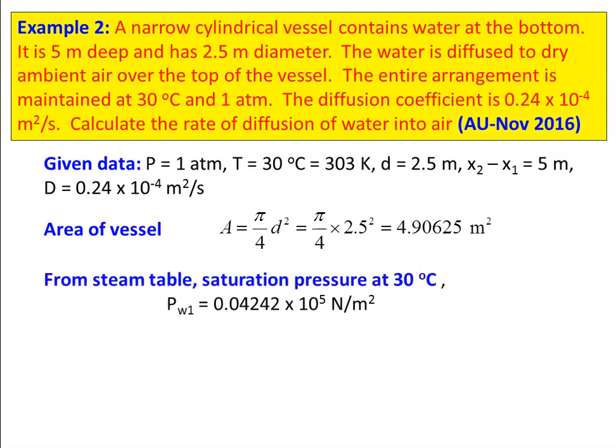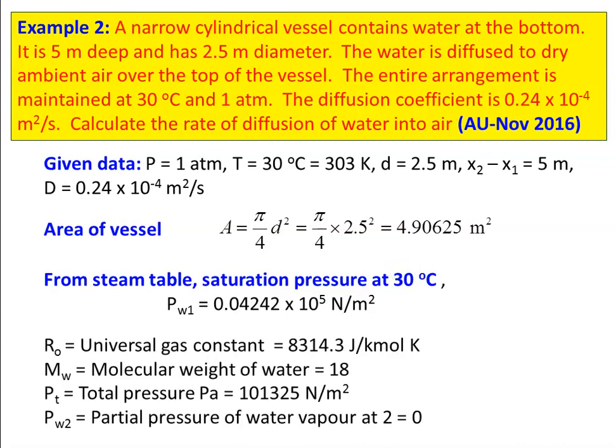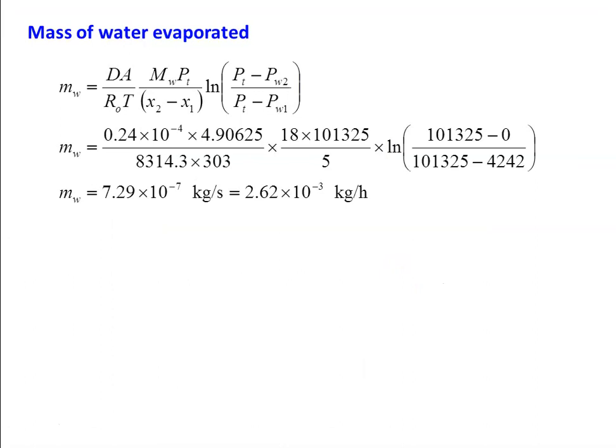From the steam table, the saturation pressure at 30 degree Celsius, PW1 equal to 0.04242 bar, which is 0.04242 into 10 power 5 Newtons per meter square. The universal gas constant is 8314.3 joules per kilogram mole Kelvin. Molecular weight of water is 18. Total pressure is 1 atmosphere, which is 101325 Newtons per meter square. The partial pressure at location 2 is 0. Using the same equation, substituting the numerical values: 0.24 into 10 power minus 4, times area 4.90625, divided by 8314.3 into 303, into 18, total pressure 101325, distance x2 minus x1 equal to 5.